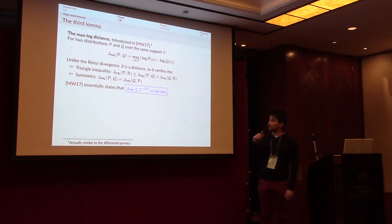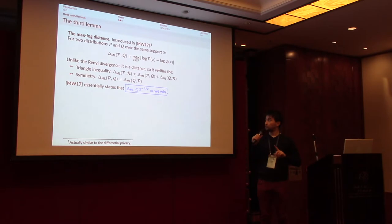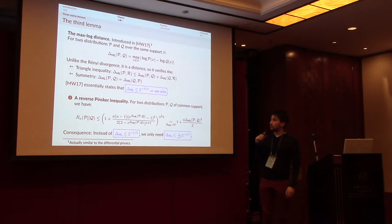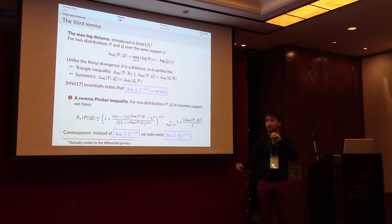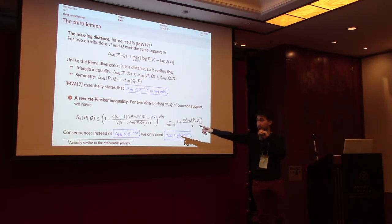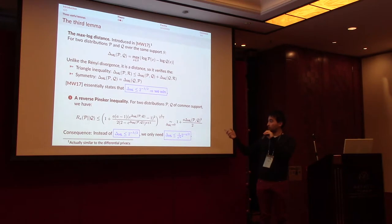Micciancio and Walter essentially state that if the max-log distance is less than 2^(−λ/2), then we win. In this work, I present a reverse Pinsker inequality. The classical Pinsker inequality connects the Kullback–Leibler divergence to the statistical distance; in this reverse Pinsker inequality, I connect the Rényi divergence on the left to the max-log distance on the right. Essentially, the Rényi divergence equals 1 + O(max-log distance²).